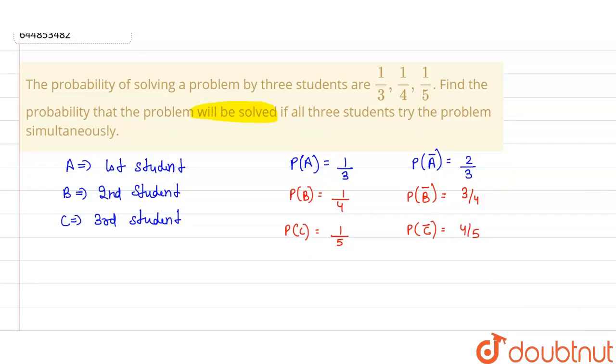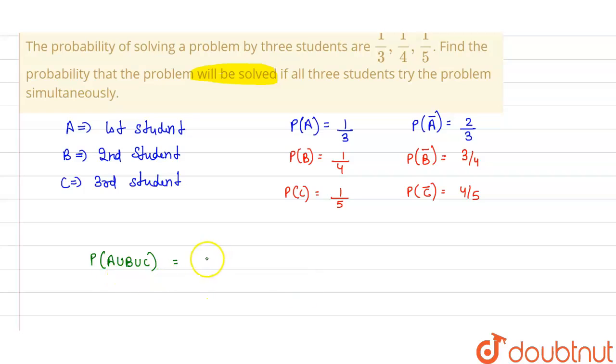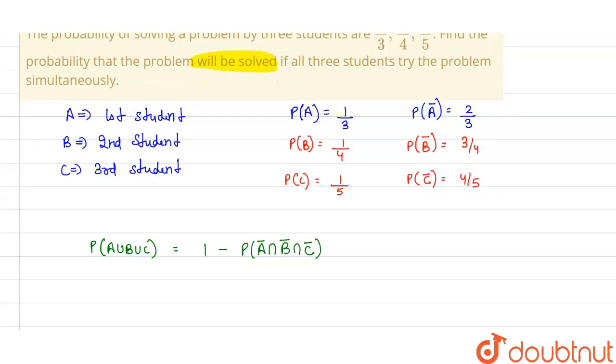Now here the question is the students try all the problems simultaneously. That means probability of A union B union C. This is we have to find. Now this is equal to 1 minus probability that A can't solve the problem, intersection probability that B can't solve the problem, and intersection that C can't solve the problem.